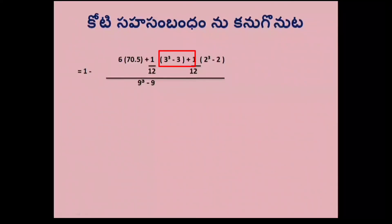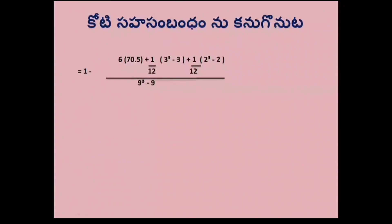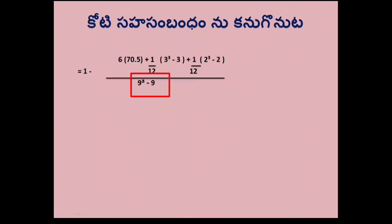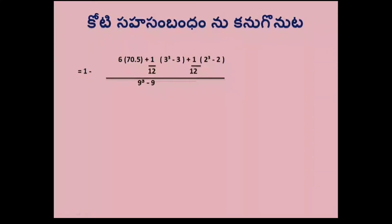9 cubed minus 9 equals 729 minus 9 equals 720. So we compute 1 minus 6 times [30.5 plus 2 plus 0.5] divided by 720, completing the Spearman rank correlation calculation with tied ranks.